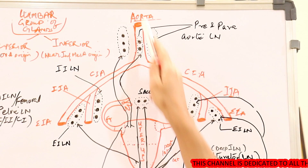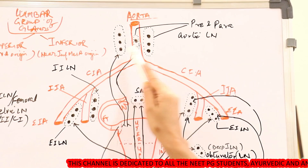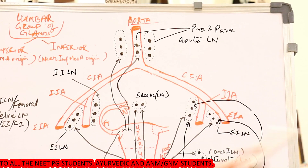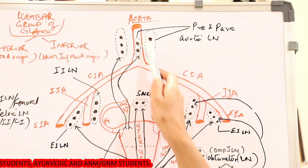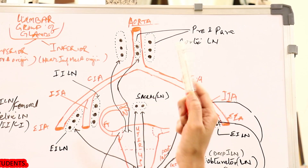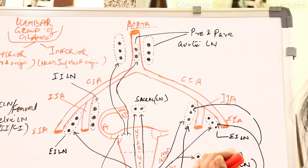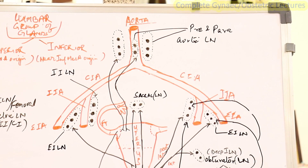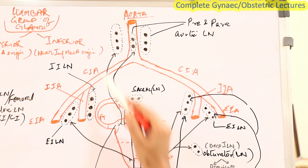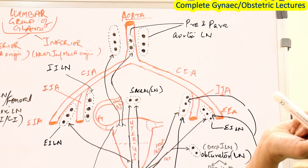This is the aorta. Before the aorta divides into the right and left common iliac artery, there are lymph nodes in front and to the side, which are called pre-aortic and para-aortic lymph nodes. These are the last ones to get involved in cases of genital cancer because they are very deep.